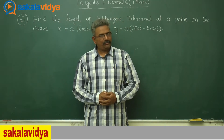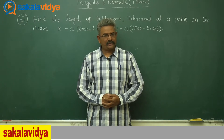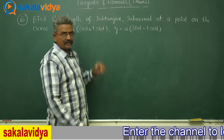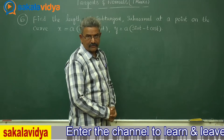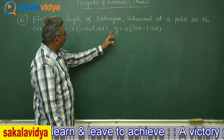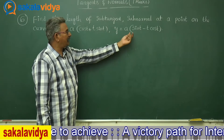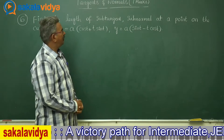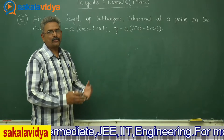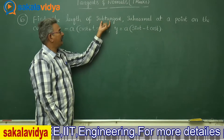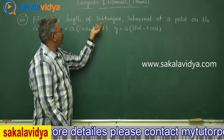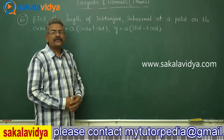Today, we are going to discuss one more problem on tangents and normals. The question is: Find the length of the subtangent and subnormal at a point on the curve x = a(cos t + t sin t) and y = a(sin t − t cos t). Parametric differentiation has to be performed here to find dy/dx — the slope of the tangent. After that, the subtangent and subnormal formulas are recalled and values substituted.